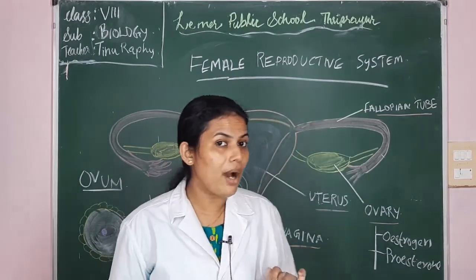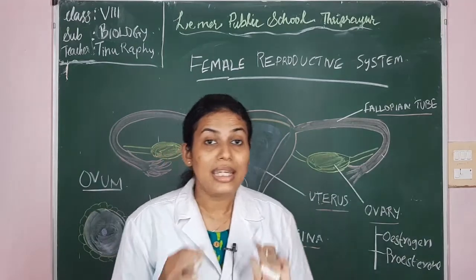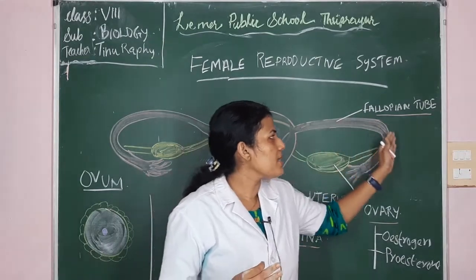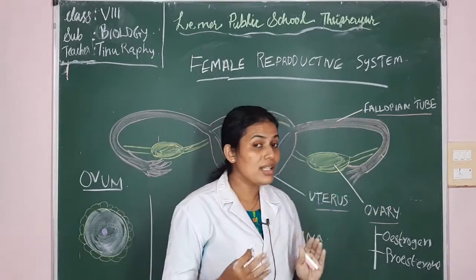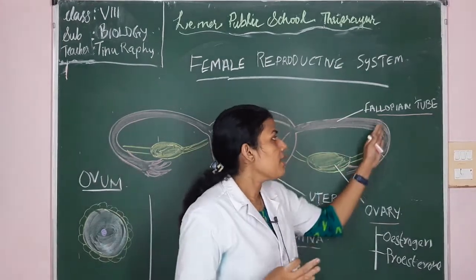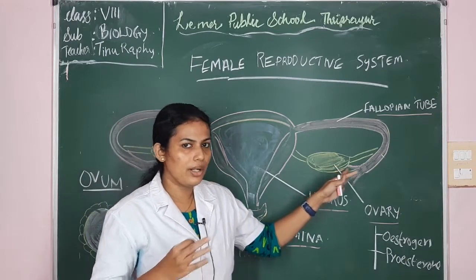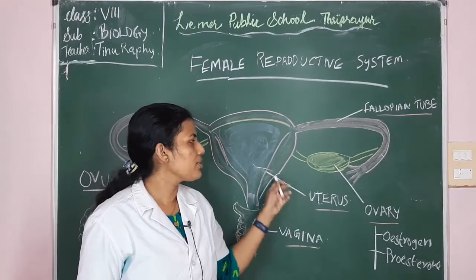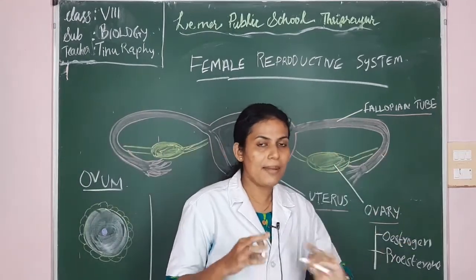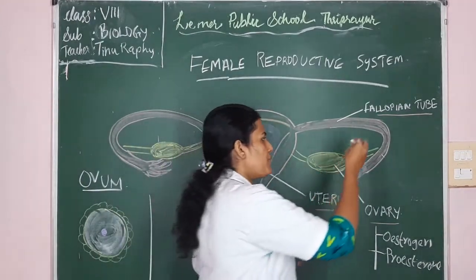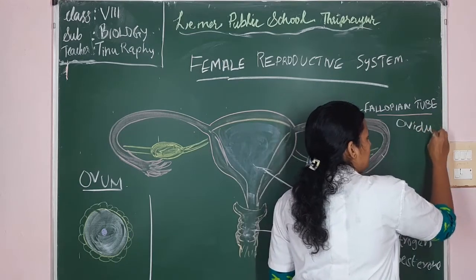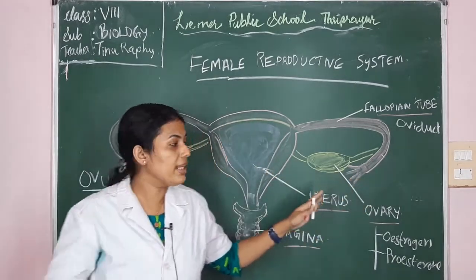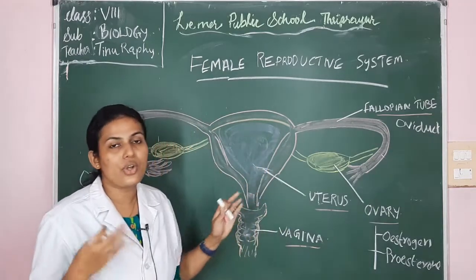Now let's learn about the second part — the fallopian tube. Just as males have a sperm duct, females have a tube called the fallopian tube, also called the oviduct. One end of the fallopian tube is near the ovary, whereas the other end is joined to the uterus region. It is a muscular duct connecting the ovary to the uterus.